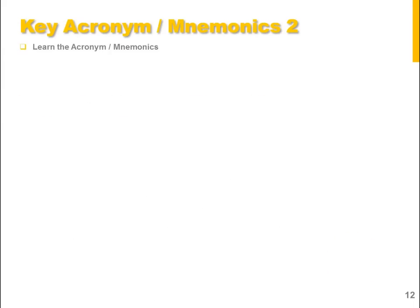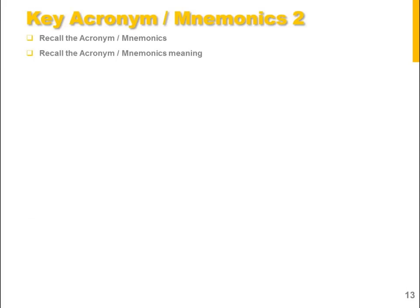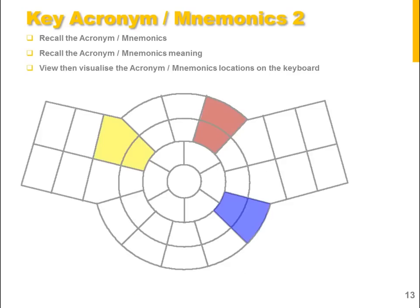If you are ready, we will move on to the second set of acronyms and mnemonics. Again, learn the acronyms and mnemonics, view then visualize where each is located on the keyboard. Moving left to right, we have DS — Deep Space, UK — United Kingdom, FY — Forever Young. Let's reinforce these. Yellow is Deep Space, red is United Kingdom, blue is Forever Young.